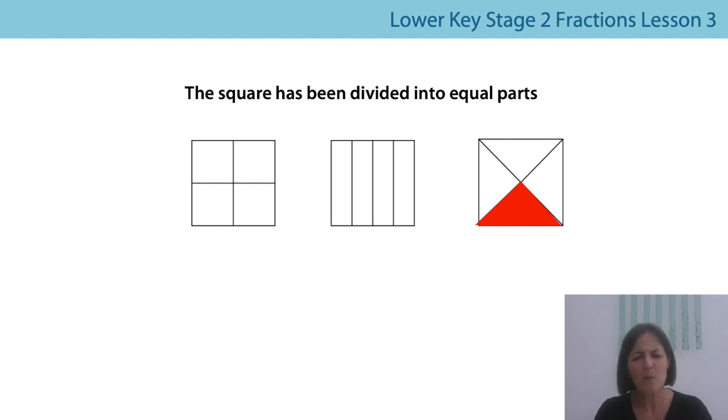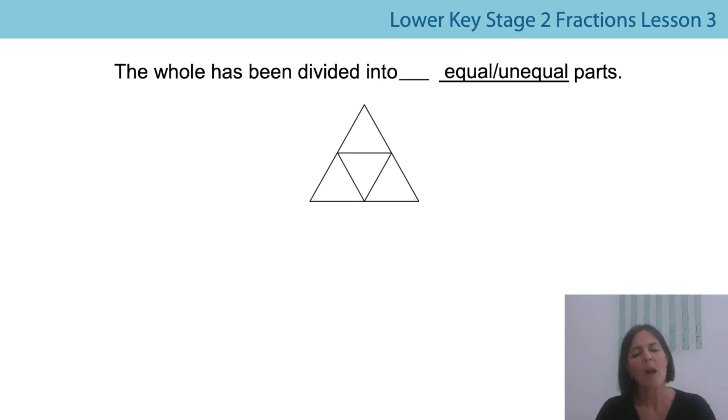Is that going to be true of a triangle as well? Is it possible to divide a triangle into four equal parts? What do you think? Oh remind me how many sides in a triangle? Lovely. Let's have a look then. So here's a triangle. Oh what kind of triangle is this? It's an equilateral triangle. You're right. And can we see how many parts it's been divided into? Let's count together. One, two, three, four. It's been divided into four parts and are they equal or unequal? So let's say it all together. The whole has been divided into four equal parts. Well done.